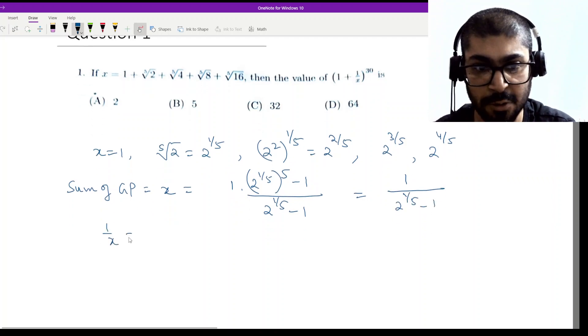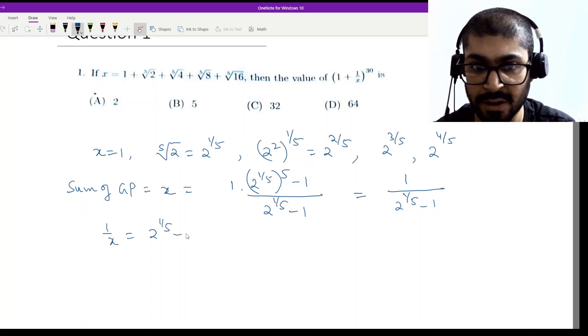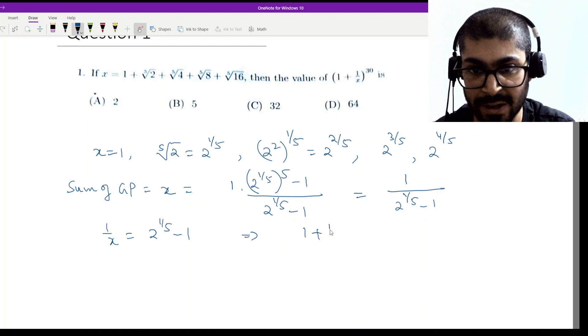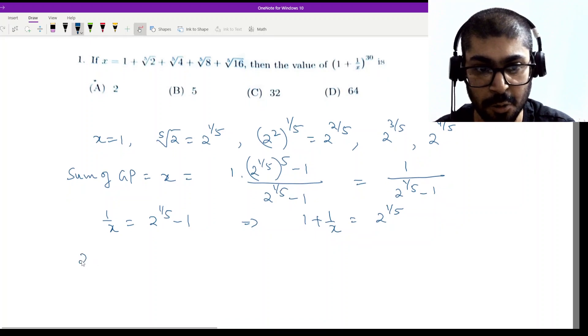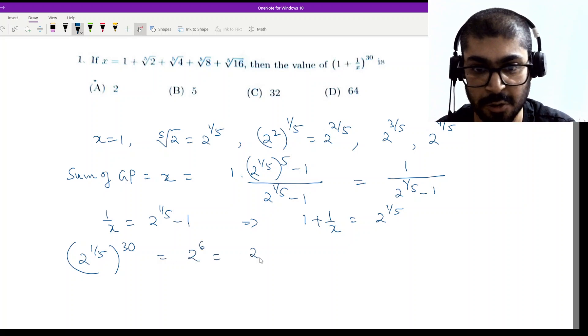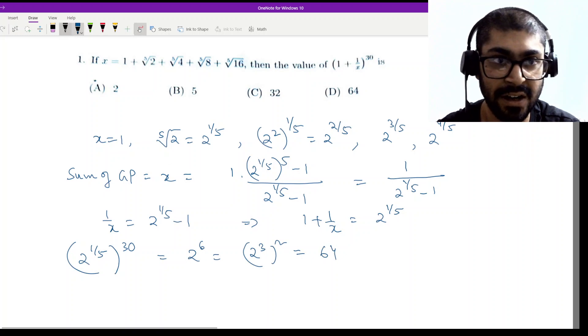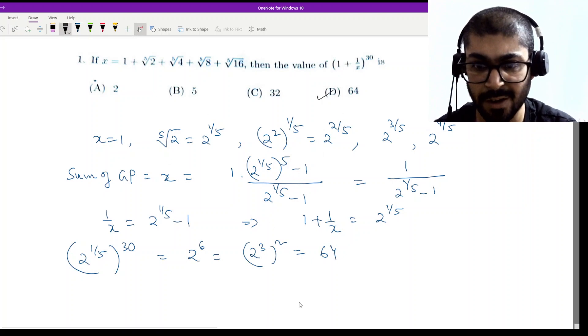So if I raise everything to the power 30, then (2^(1/5))^30 is basically 2^6, which is 2 cubed whole square, which is 64. So here I have option D.